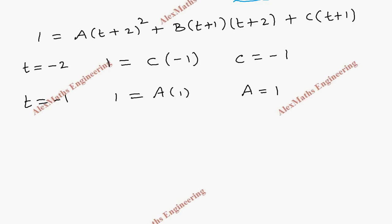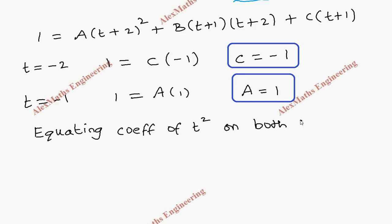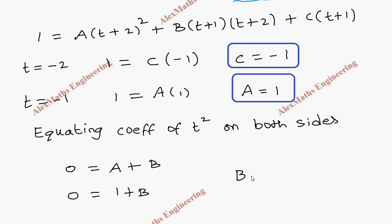Now we have A and C. To find B, no substitution will zero out all other terms, so we compare coefficients of t² on both sides. The left side has no t² term, so the coefficient is 0. Expanding the right side: A gives t² coefficient a, and B gives t² coefficient b. So A + B = 0, and substituting A = 1 gives B = −1.